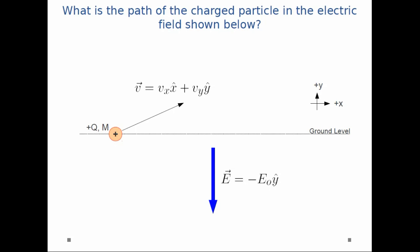So in this example I have a charged particle, has a charge plus q and a mass m. I initially have it at ground level and I shoot it up and to the right with some initial velocity given by vx in the x-hat and vy in the y-hat.